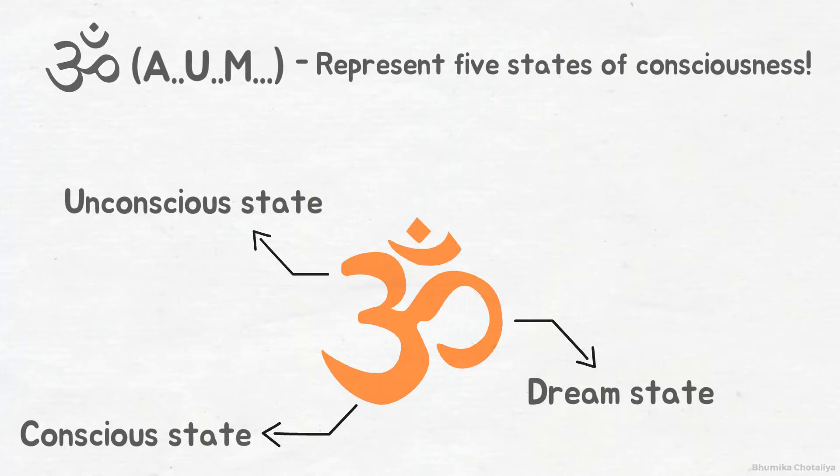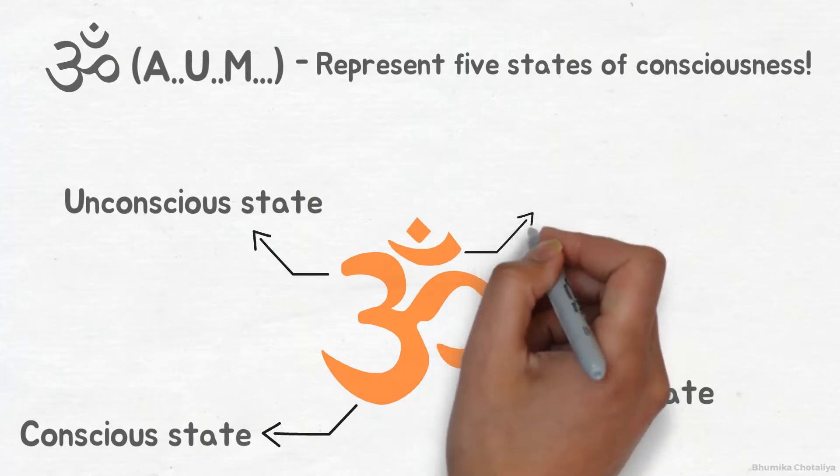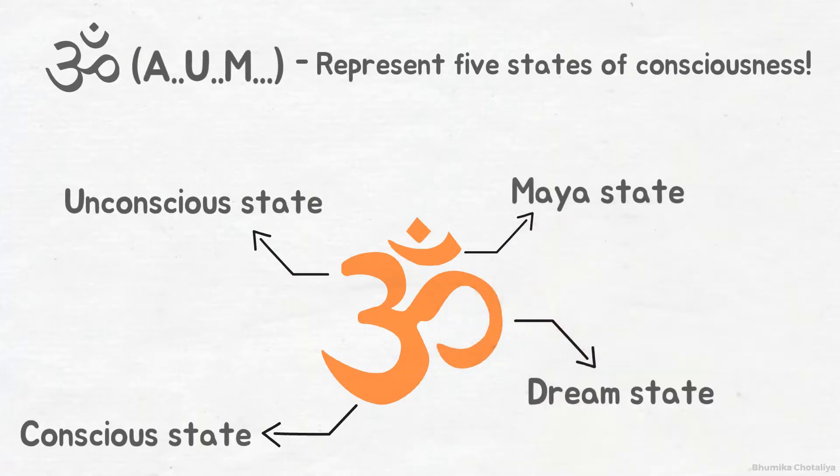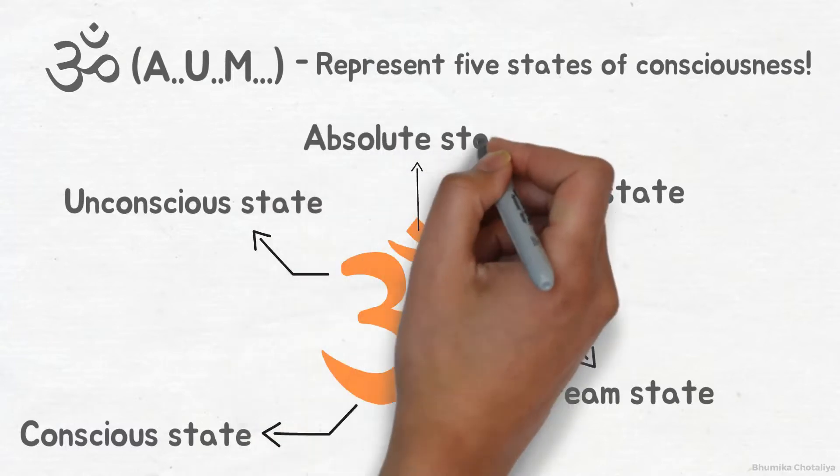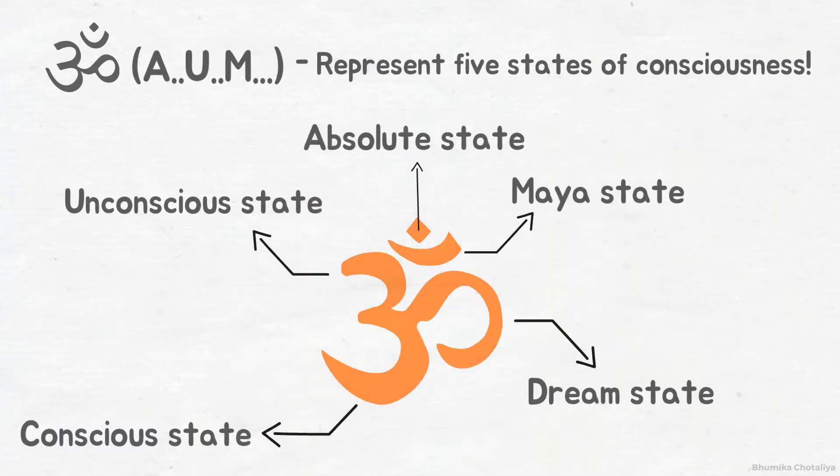The semicircle at the top is the Maya state. Maya means illusion, the biggest obstacle to spiritual development. The dot at the top represents the absolute state. It's the highest state of consciousness, the ultimate state of spiritual bliss.